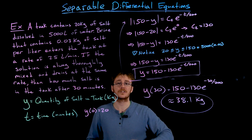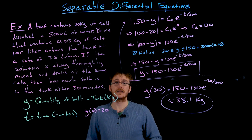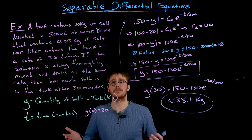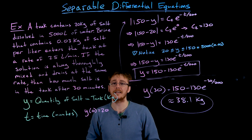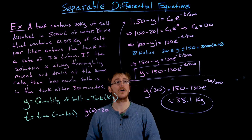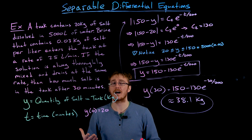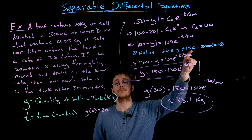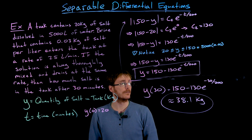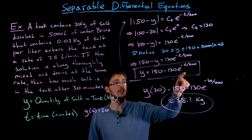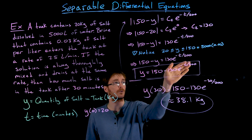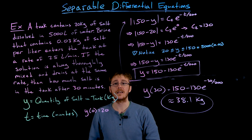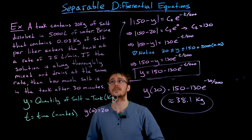As a bonus observation, if we let this tank continue with brine pumping in indefinitely, eventually the original water and salt would be replaced entirely by brine. Taking the limit as t approaches infinity of y = 150 minus 130 · e^(negative t/200), the exponential term goes to zero, leaving just 150. So the concentration of salt in the tank increases from 20 kilograms, approaching but never exceeding 150 kilograms of salt.